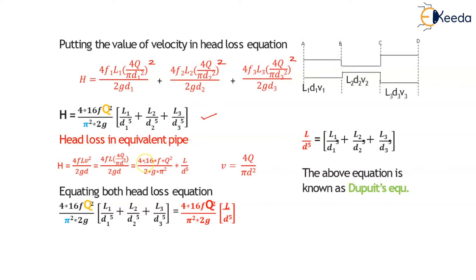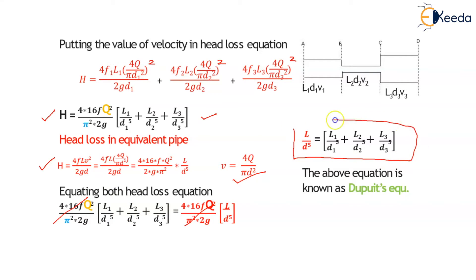The head loss in the equivalent pipe is given by 4F·L·V²/(2g·D). Substituting V = 4Q/(π·D²) gives H = (4×16×F×Q²)/(2g·π²) × L/D⁵. Equating both head loss equations, the common terms cancel, yielding L/D⁵ = L1/D1⁵ + L2/D2⁵ + L3/D3⁵. This equation is also known as Dupuit's equation.